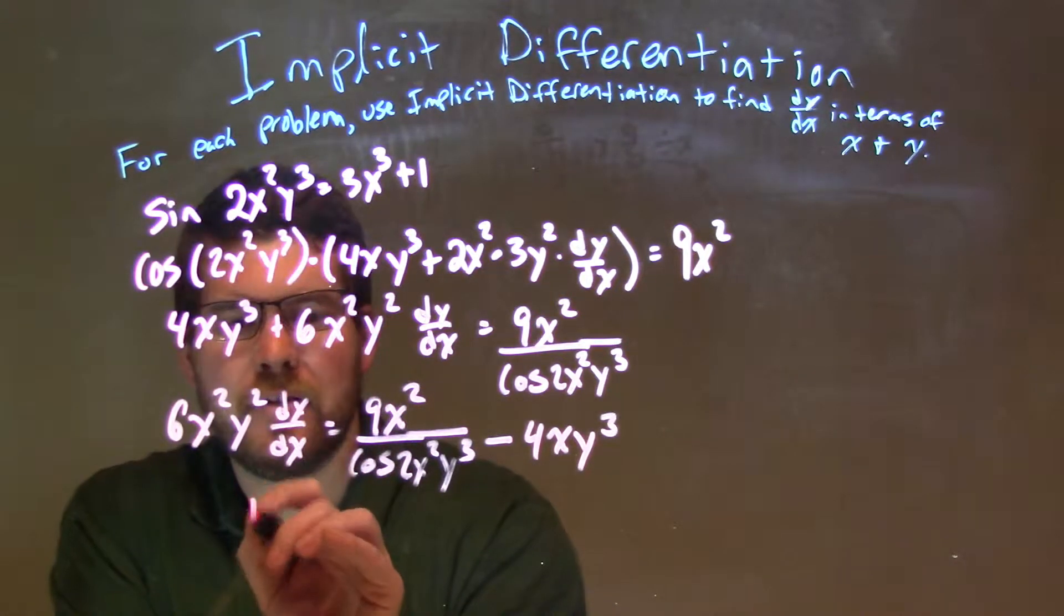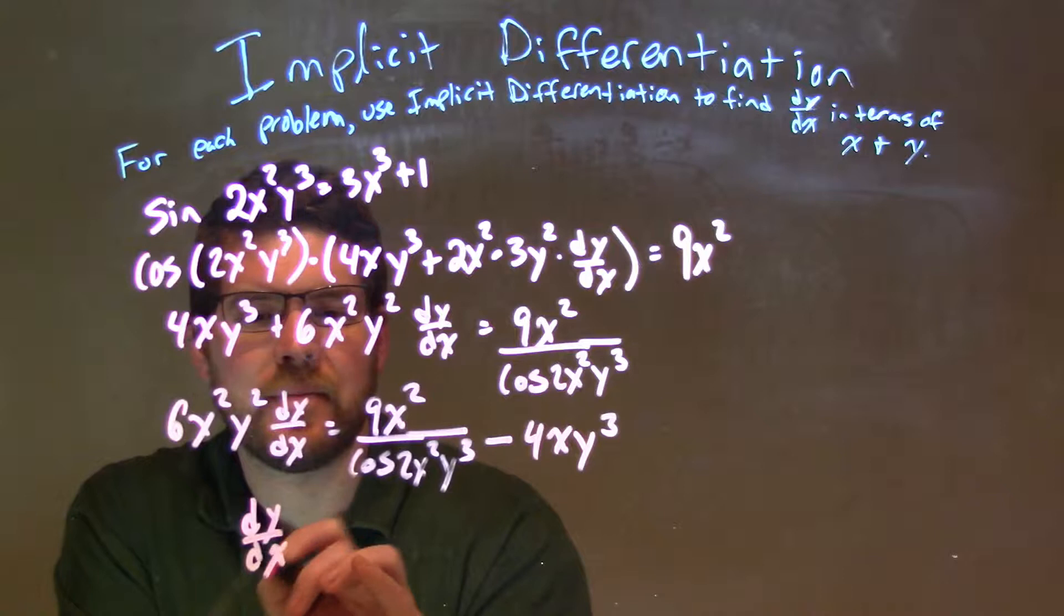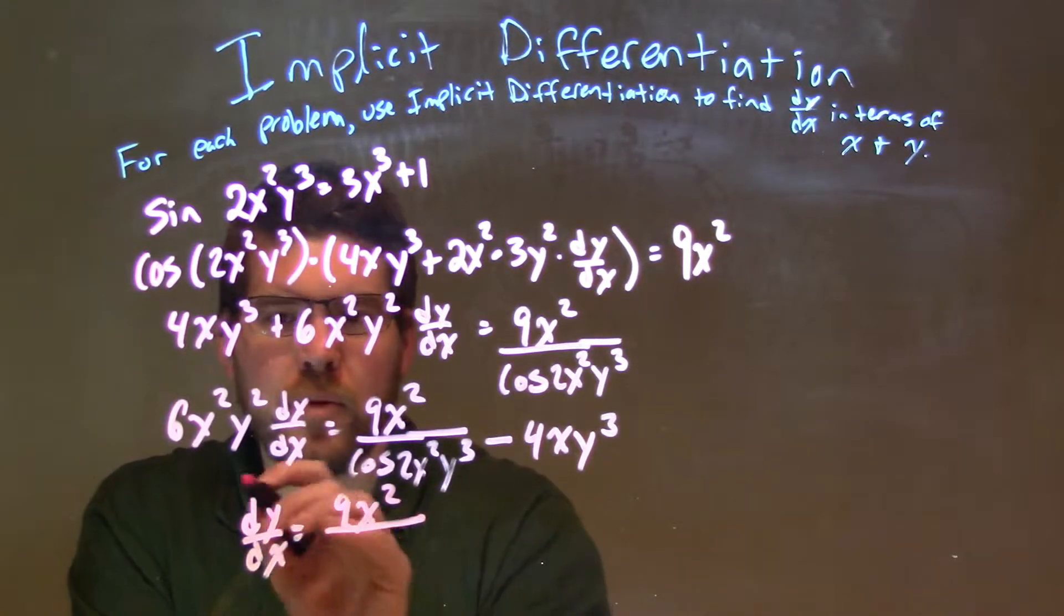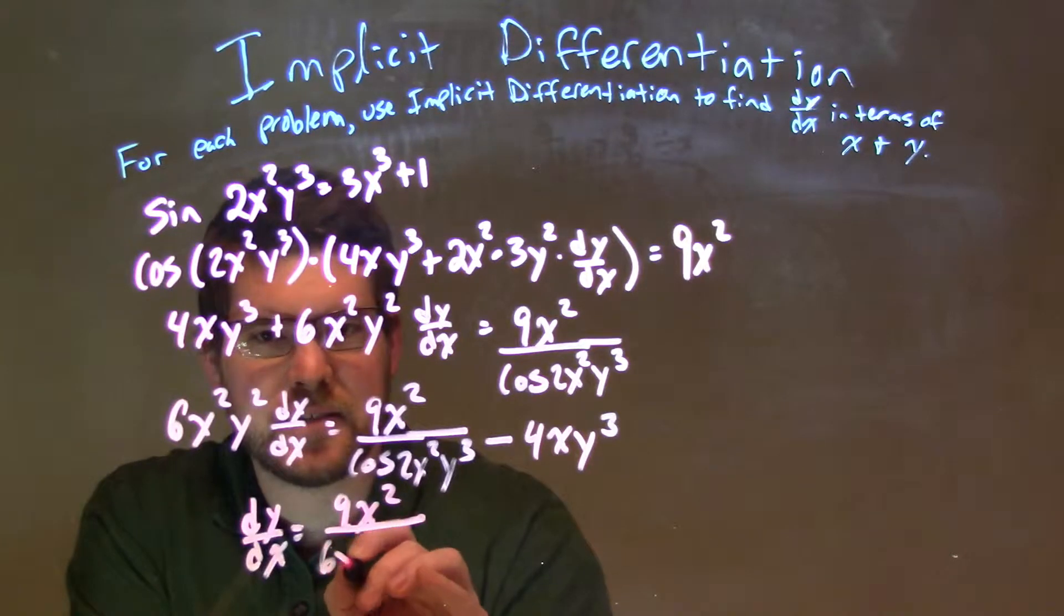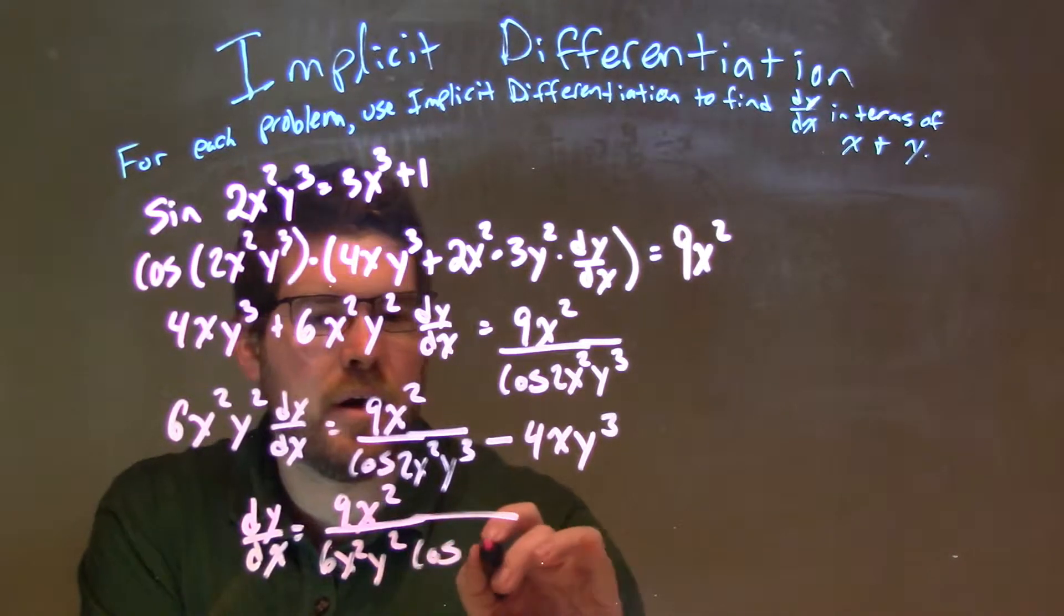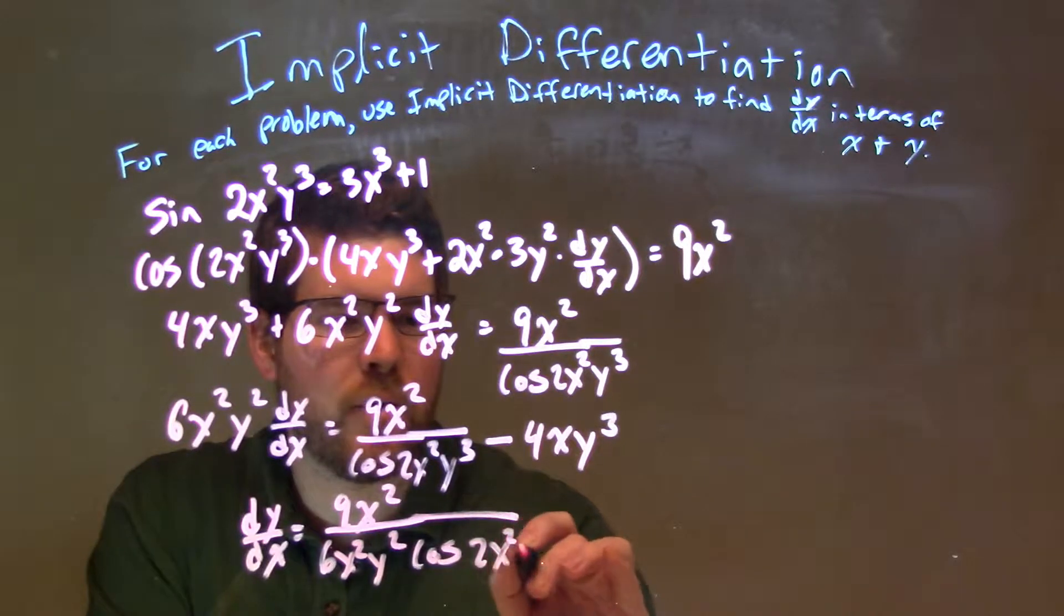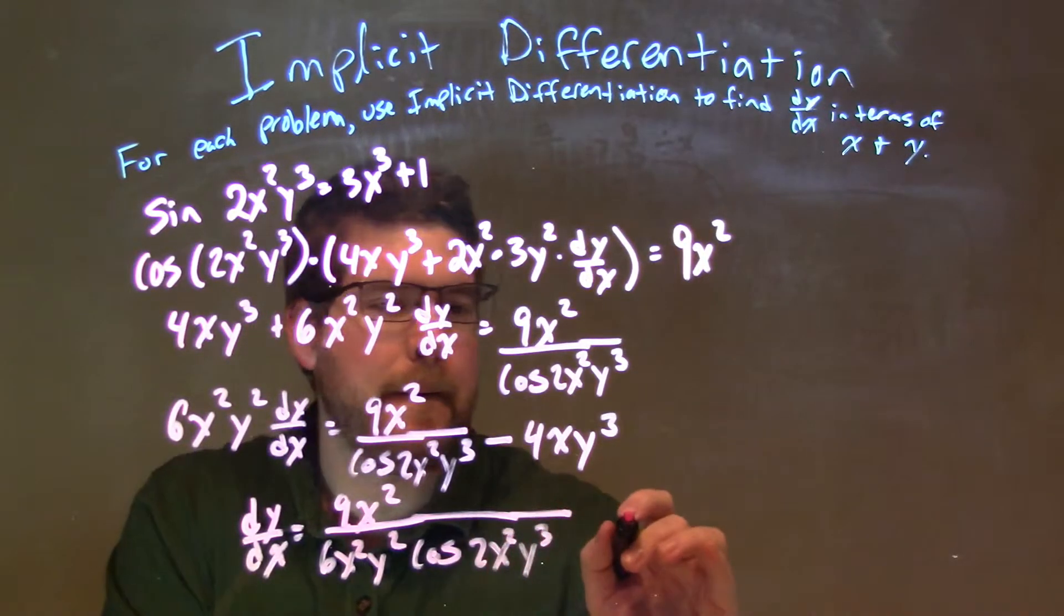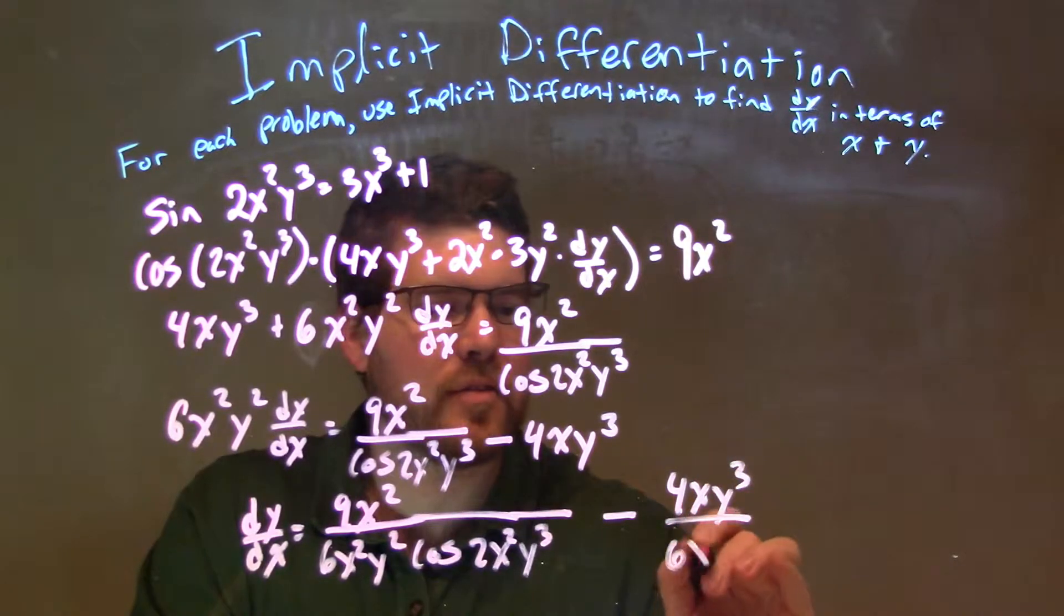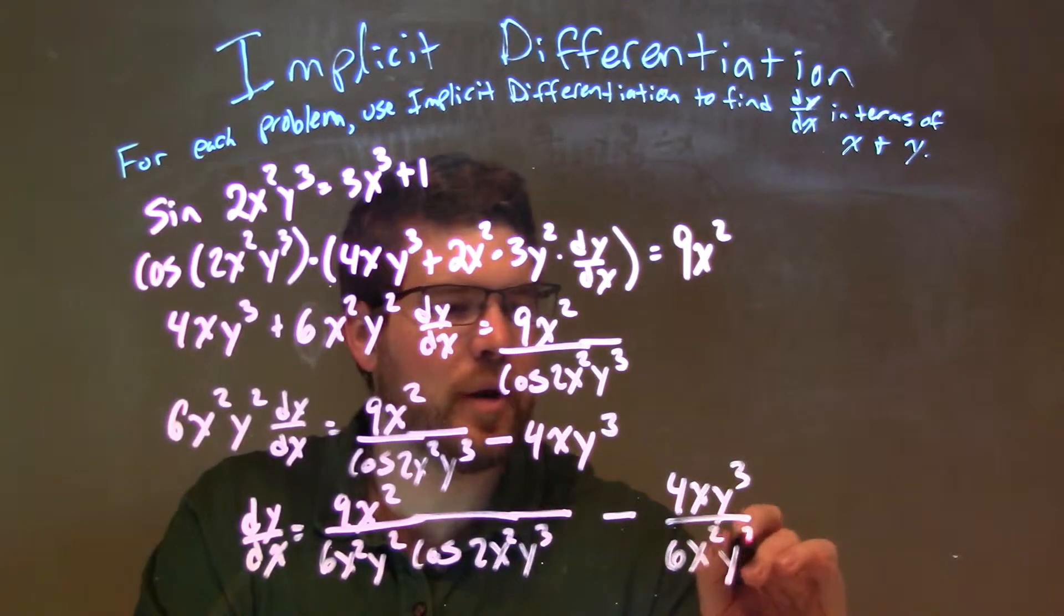So I have dy/dx equals 9x squared over 6x squared y squared cosine of 2x squared y cubed minus 4xy cubed over 6x squared y squared.